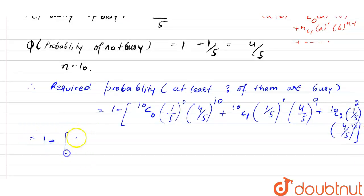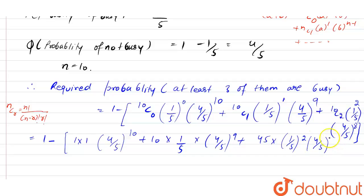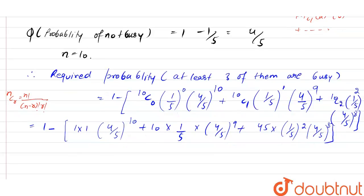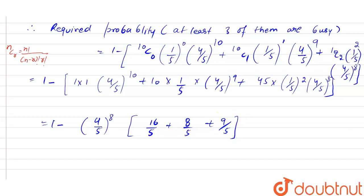After evaluating: 10C0 equals 1 using the formula nCr = n! / ((n−r)! × r!). So we get 1 minus [1 × (4/5)^10 + 10 × (1/5) × (4/5)^9 + 45 × (1/5)^2 × (4/5)^8]. Taking (4/5)^8 common, the bracket becomes 16 by 5 plus 8 by 5 plus 9 by 5.